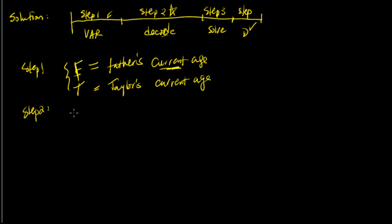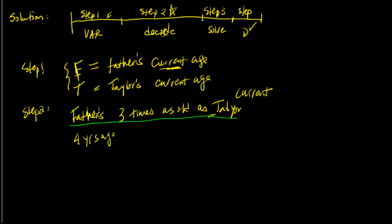Now let's read it. It says that Taylor's father is three times as old as Taylor. Since the next sentence says four years ago, we'll assume that this one is current state. So from here, what I want to do is I want to go in there and drag the equation out of this one. Taylor's father, his age is F from our definition over here, is three times equal to three times as old as Taylor.